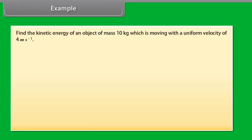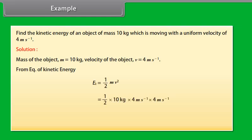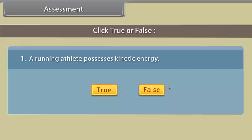Let's now find the kinetic energy of an object of mass 10 kg which is moving with a uniform velocity of 4 m/s. Here, mass m = 10 kg and velocity v = 4 m/s. From the equation of kinetic energy, we get ½ × 10 kg × 4 m/s × 4 m/s = 80 joules. Hence, the kinetic energy of the object is 80 joules.